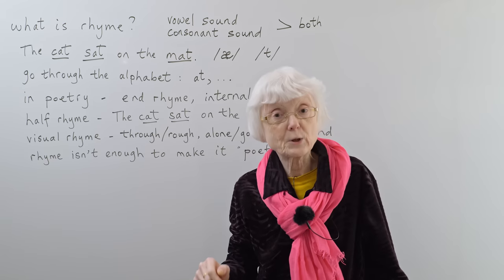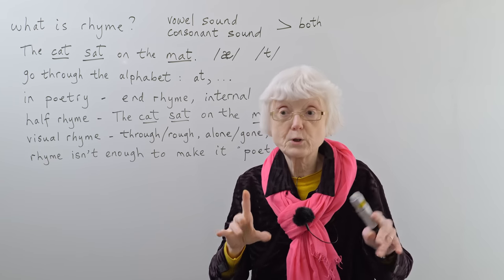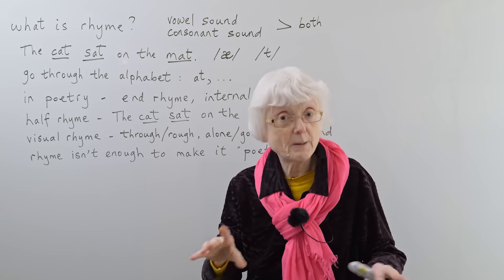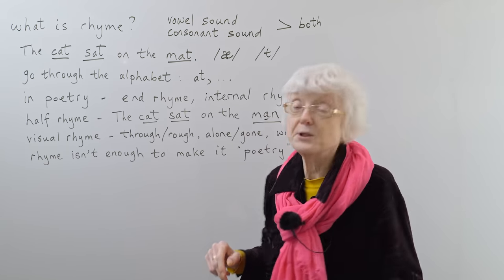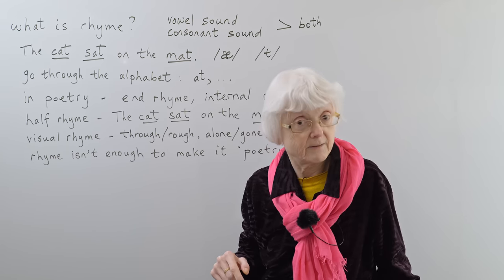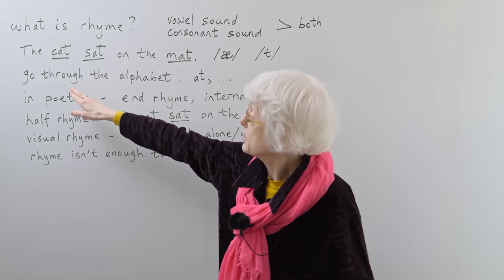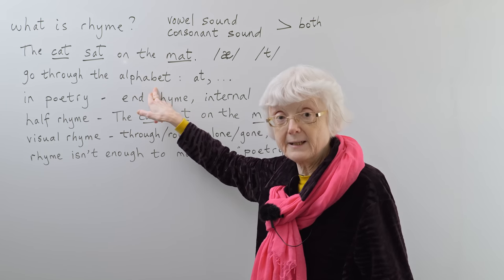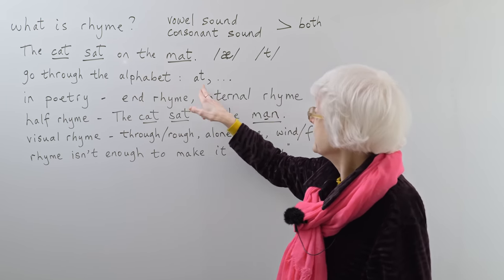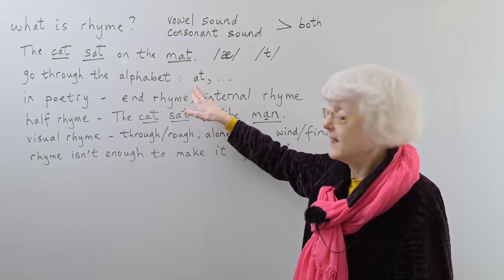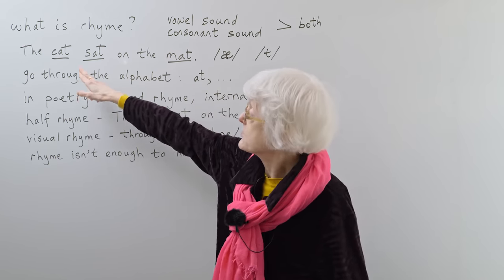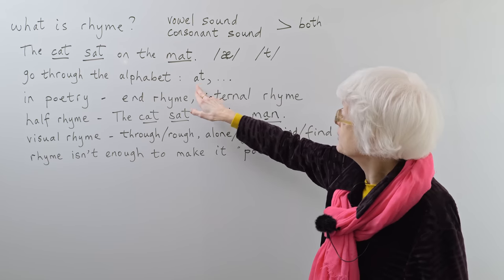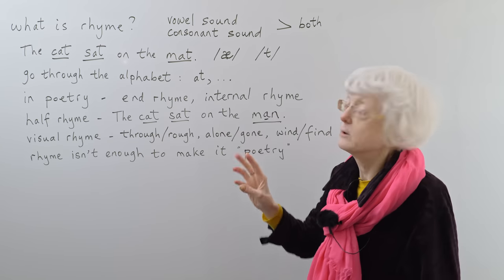If you're ever looking for a rhyme, of course you can Google it. There are websites that help you to find rhymes, but you can think of it for yourself. If you go through the alphabet, that's the way I do it. If you've got 'at' as your basic word or component, cat sat mat, you can go through the alphabet. You can go at, that.